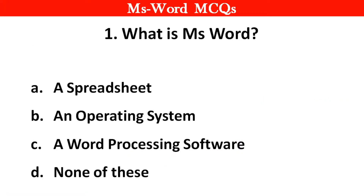Question no. 1. What is MS Word? Right answer is option C: A Word Processing Software.